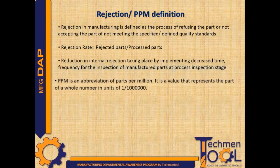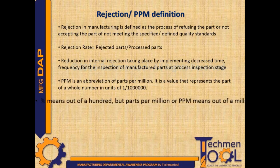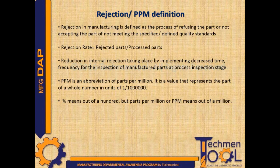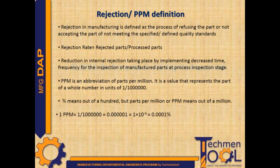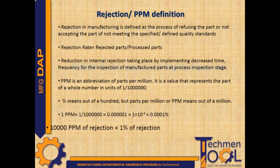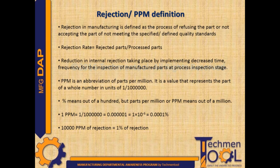PPM is an abbreviation of parts per million. It is a value that represents the part of a whole number in units of one one-millionth. Percentage means out of a hundred, but PPM means out of a million. 1 PPM equals 1/1,000,000, which equals 0.0001%. So 10,000 PPM of rejection is equal to 1% of rejection.